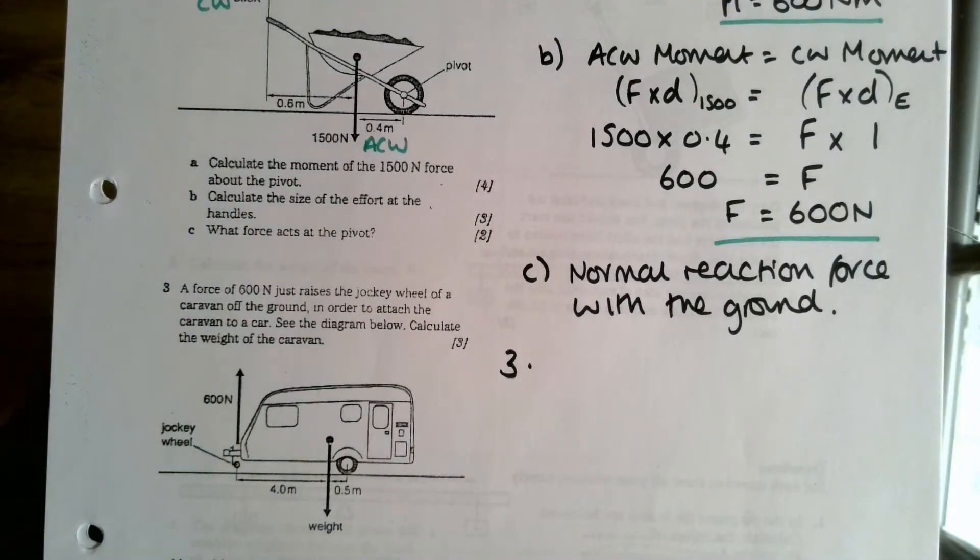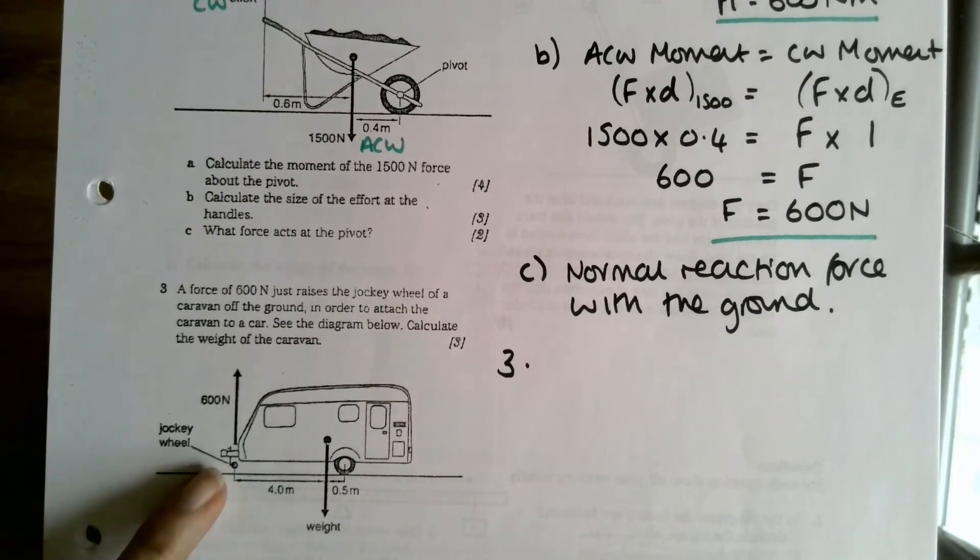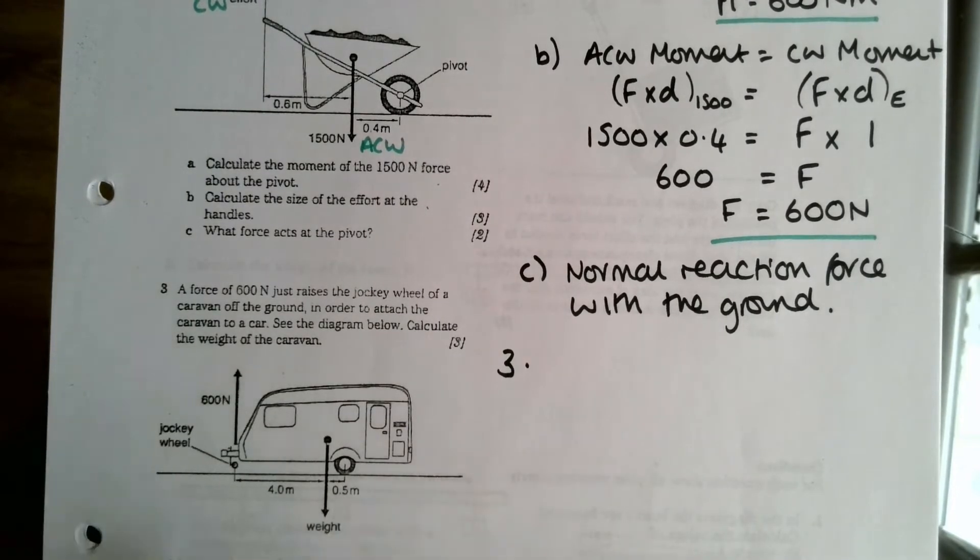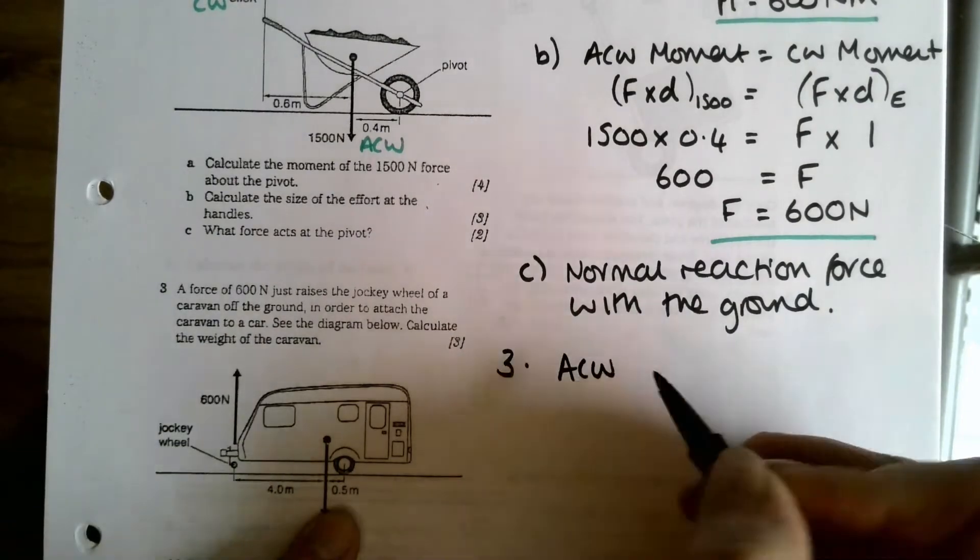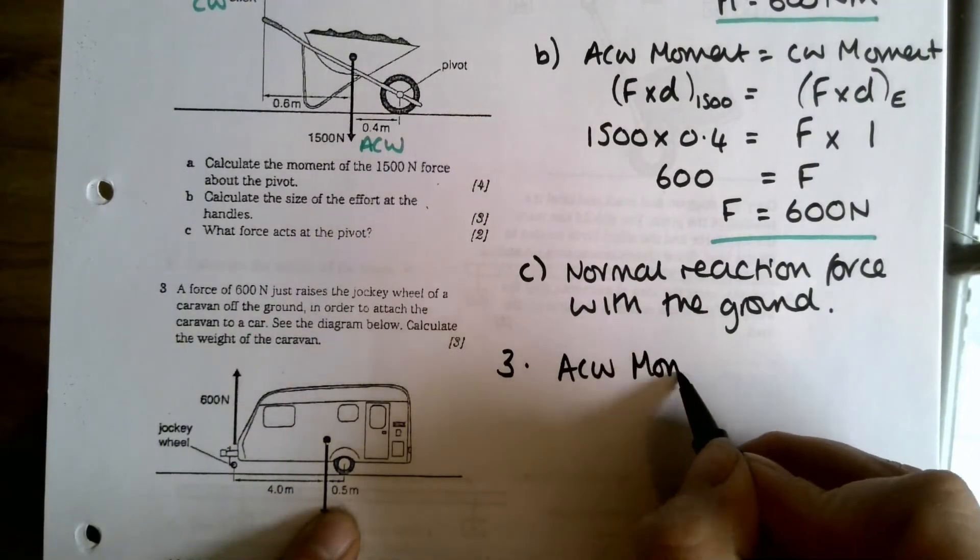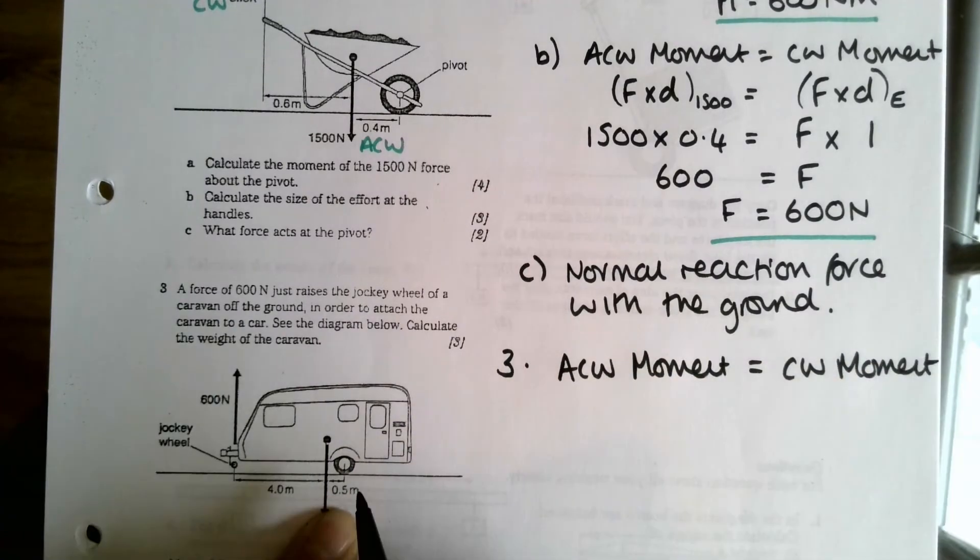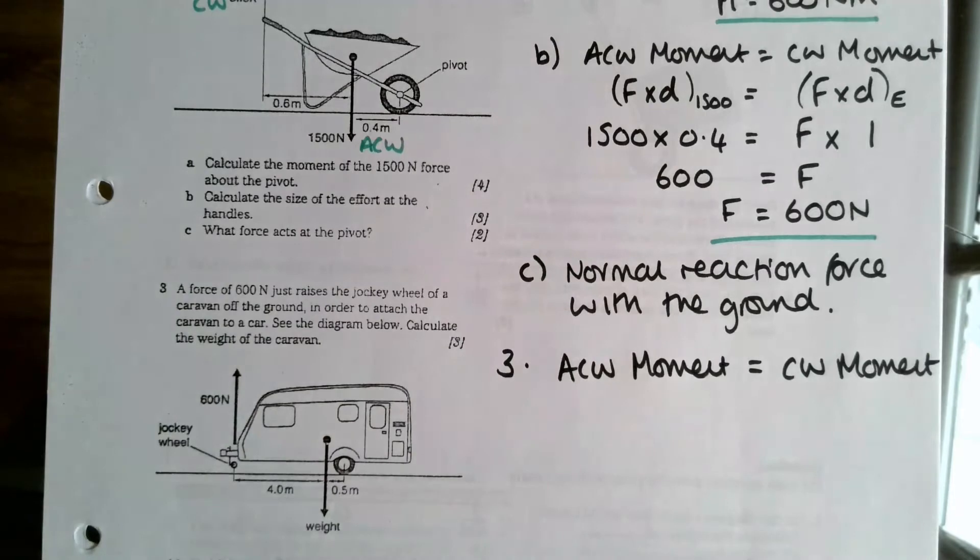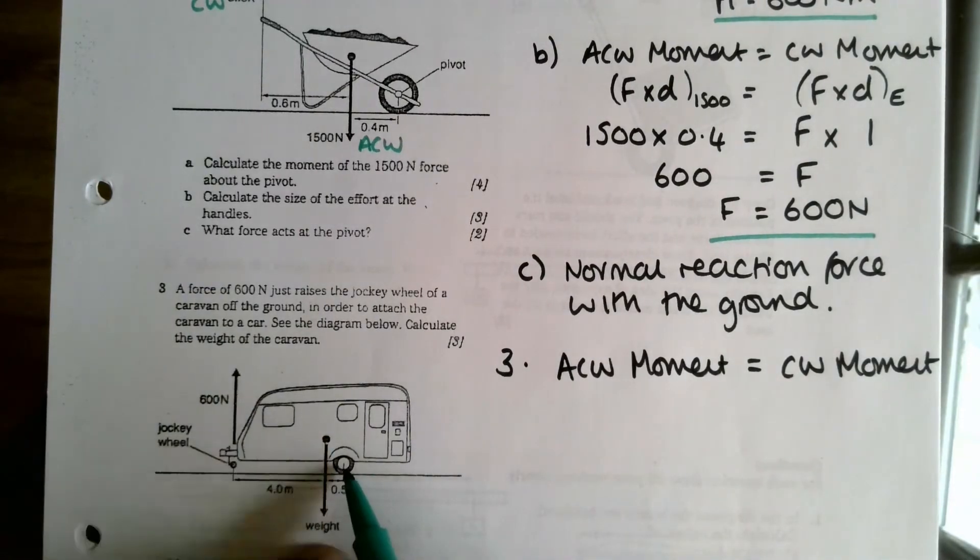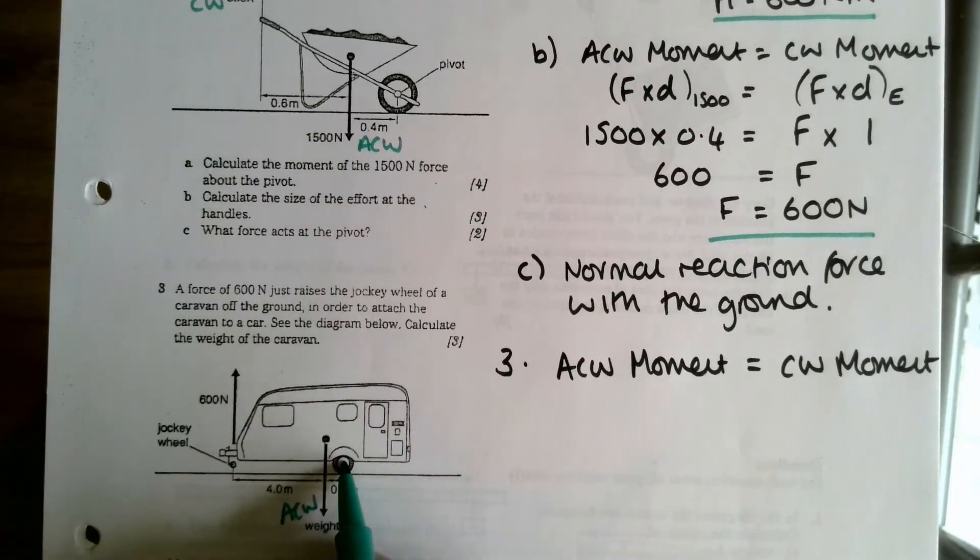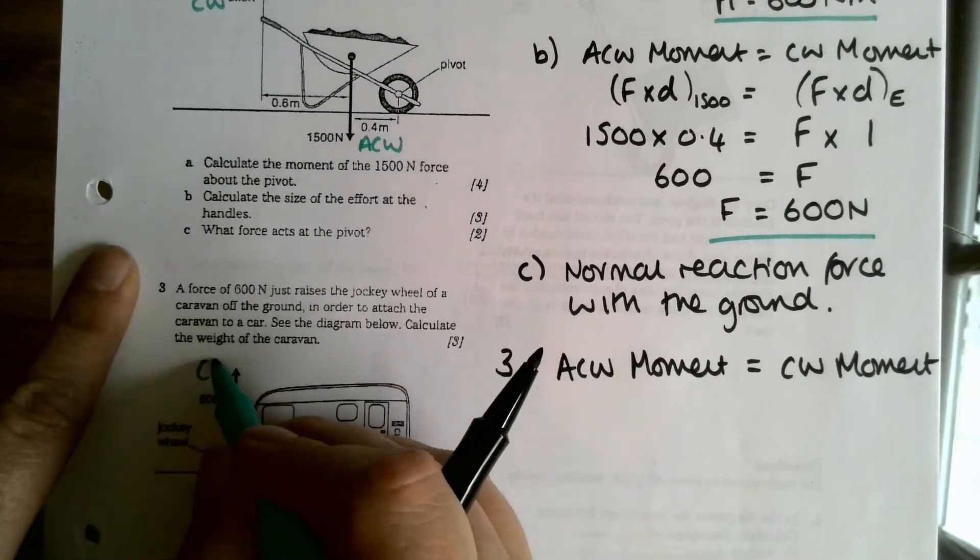So it's the same idea as with the wheelbarrow. We're calculating the size of the force that is just enough to keep this balanced and no more. Okay, so first of all we need to think, well where is the pivot in this situation? Well the pivot is the center of the wheel on the caravan. Okay, so start off because we're just about balanced: anti-clockwise moment equal to clockwise moment.